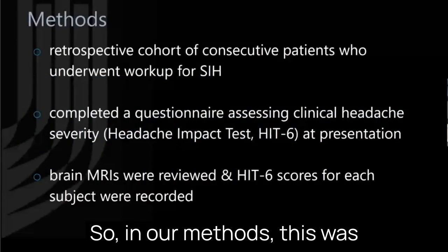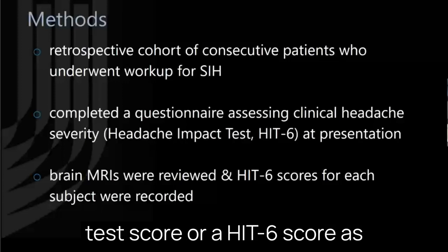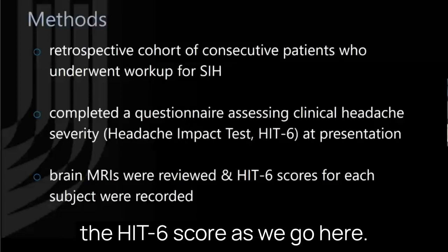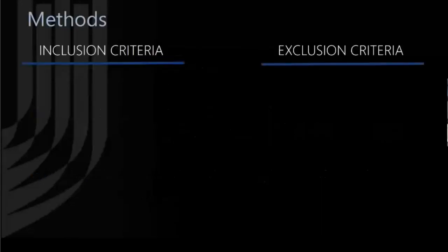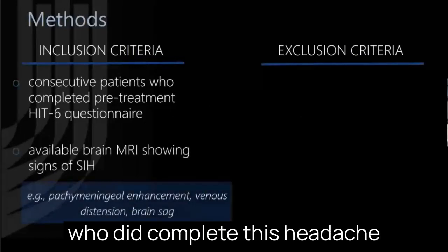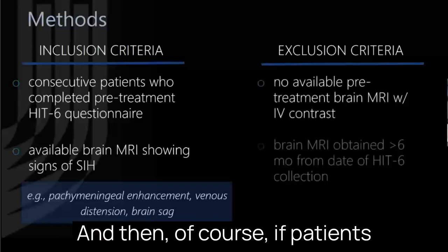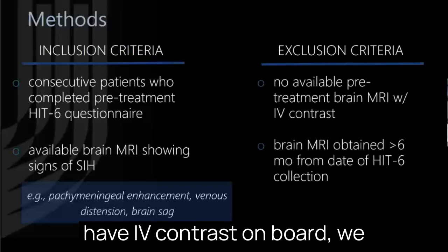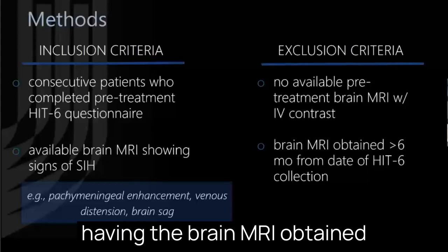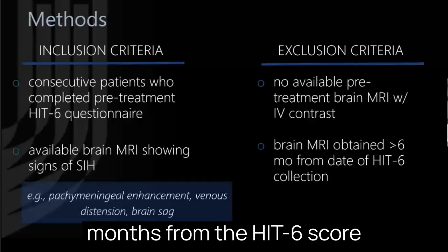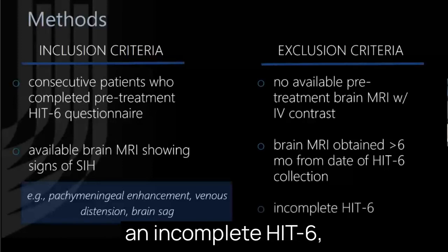This was a retrospective cohort of consecutive adult patients who underwent workup for SIH. All patients at Duke complete a Headache Impact Test score — or HIT-6 score — as part of our routine evaluation. Brain MRIs were reviewed and HIT-6 scores for each subject were recorded. Inclusion criteria required patients to have completed the HIT-6 questionnaire, have an available brain MRI showing signs of SIH, and have a pretreatment brain MRI with IV contrast, as you cannot calculate an accurate Burn Score without IV contrast. Brain MRIs were required to be obtained within zero to six months of the HIT-6 score collection. Patients with an incomplete HIT-6 were excluded.